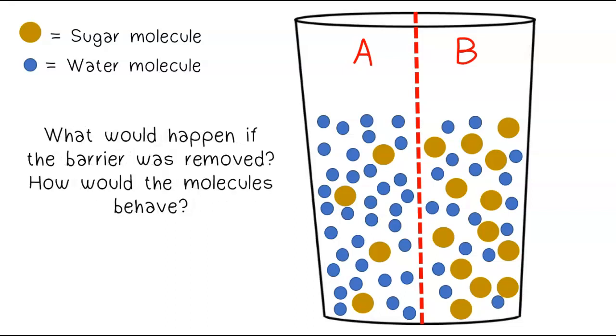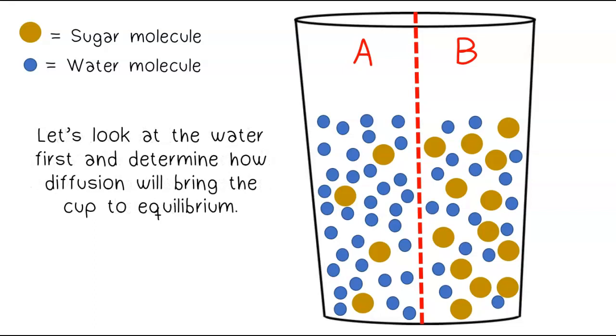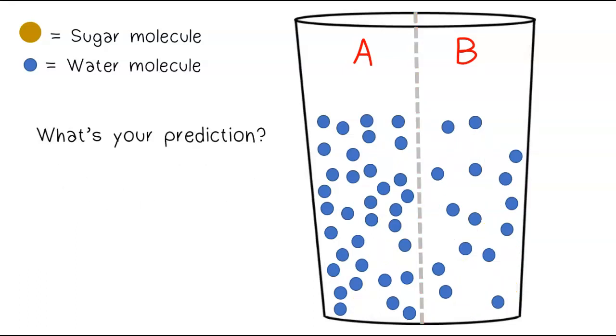What would happen if the barrier was removed? How would the molecules behave? Let's look at the water first, and determine how diffusion will bring the cup to equilibrium. What's your prediction?